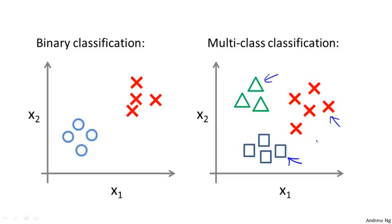We already know how to do binary classification. Using logistic regression, we know how to maybe fit a straight line to separate the positive and negative classes. Using an idea called one-versus-all classification, we can then take this and make it work for multi-class classification as well.